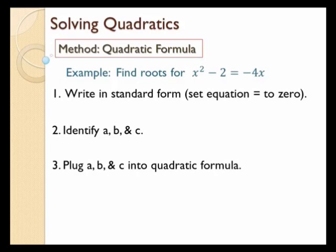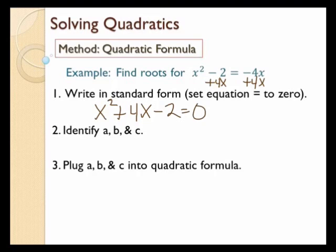I want to find the roots for x squared minus 2 equals negative 4x. The first step in using the quadratic formula is to write the equation in standard form. I'm going to do that by adding 4x to both sides. So I have x squared plus 4x minus 2 equals 0.